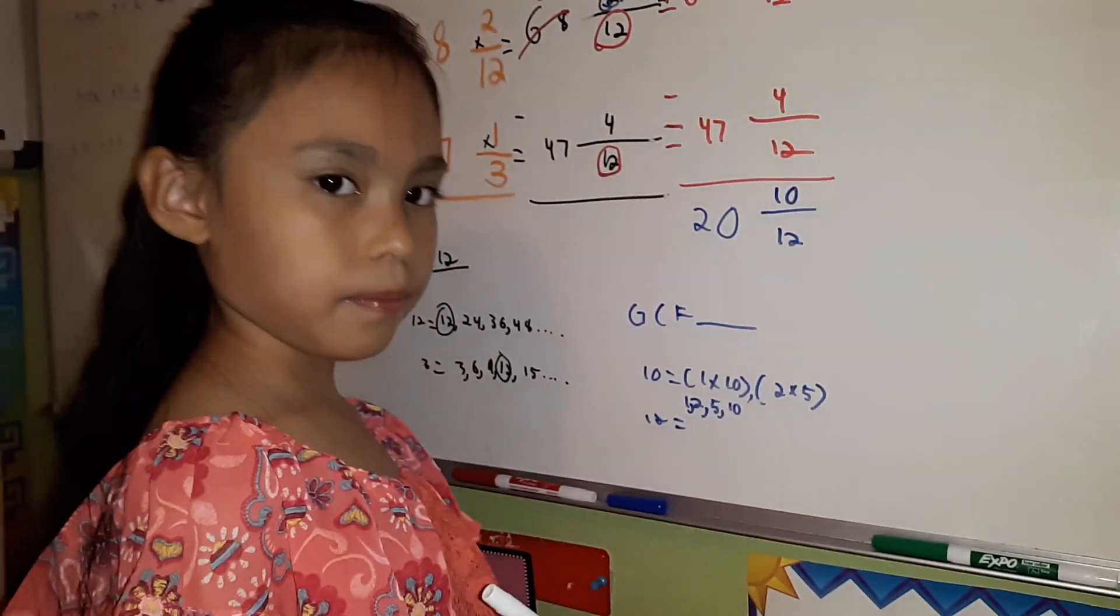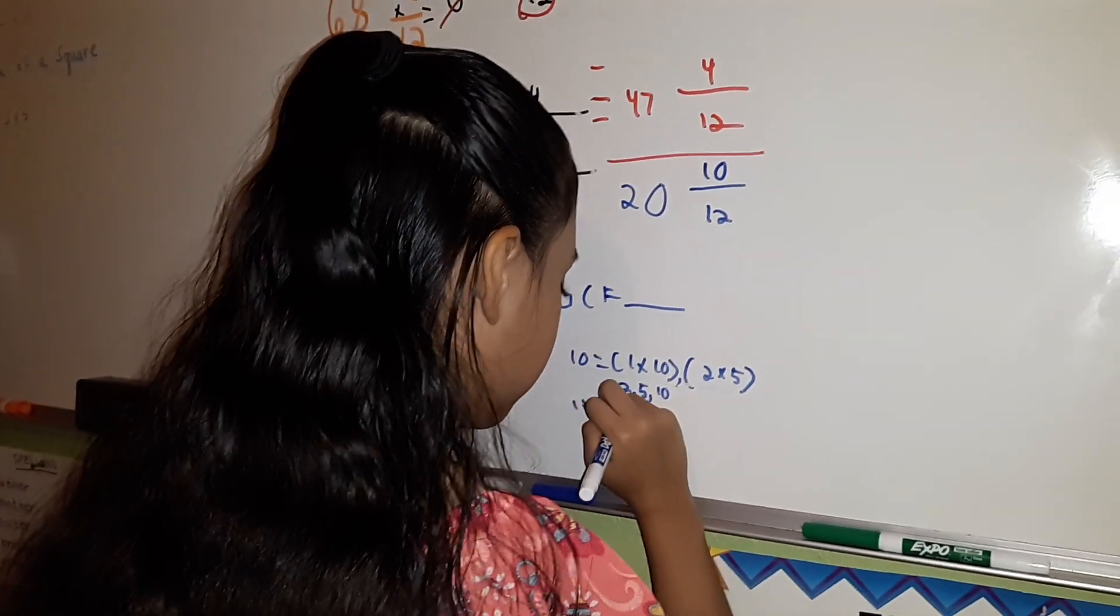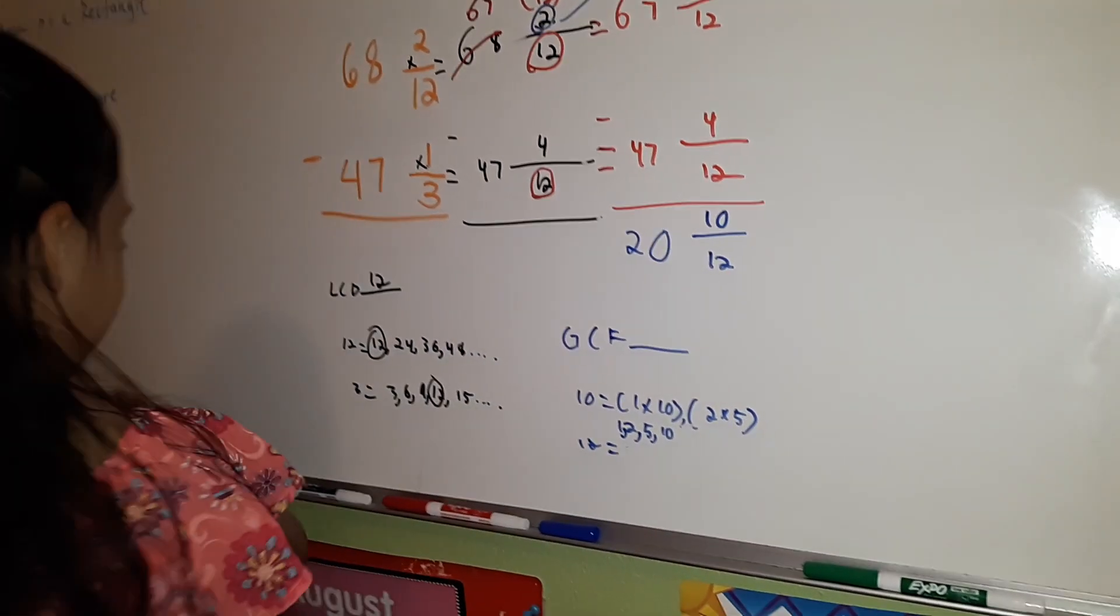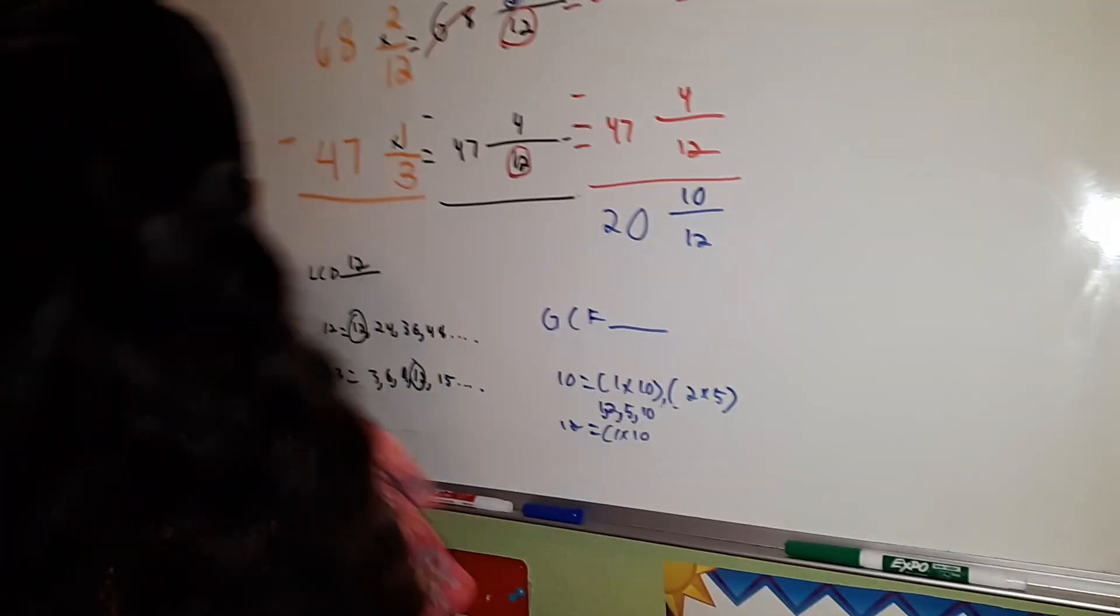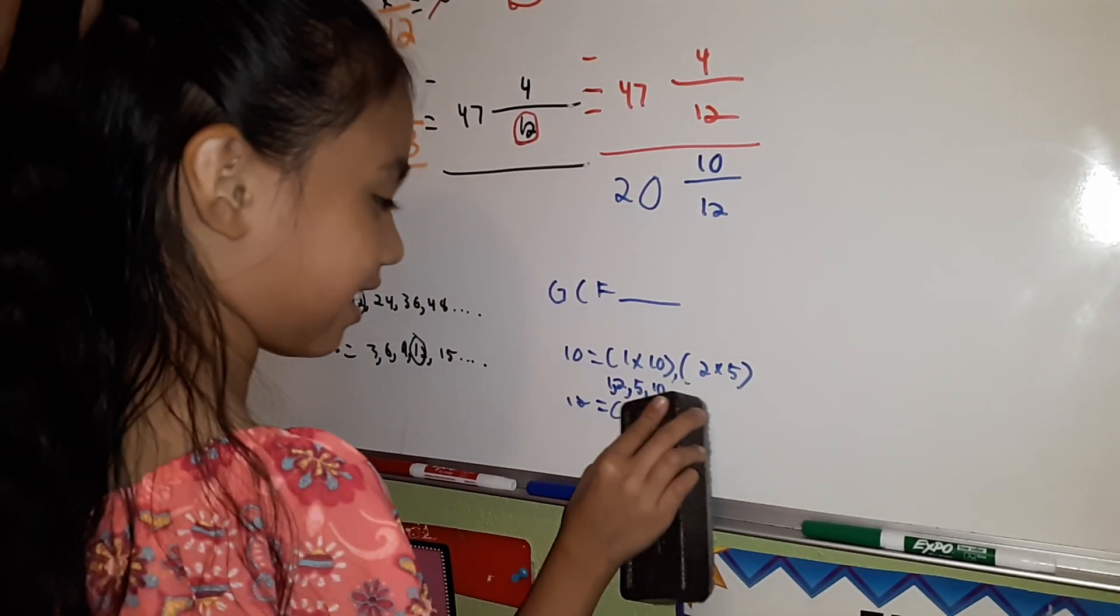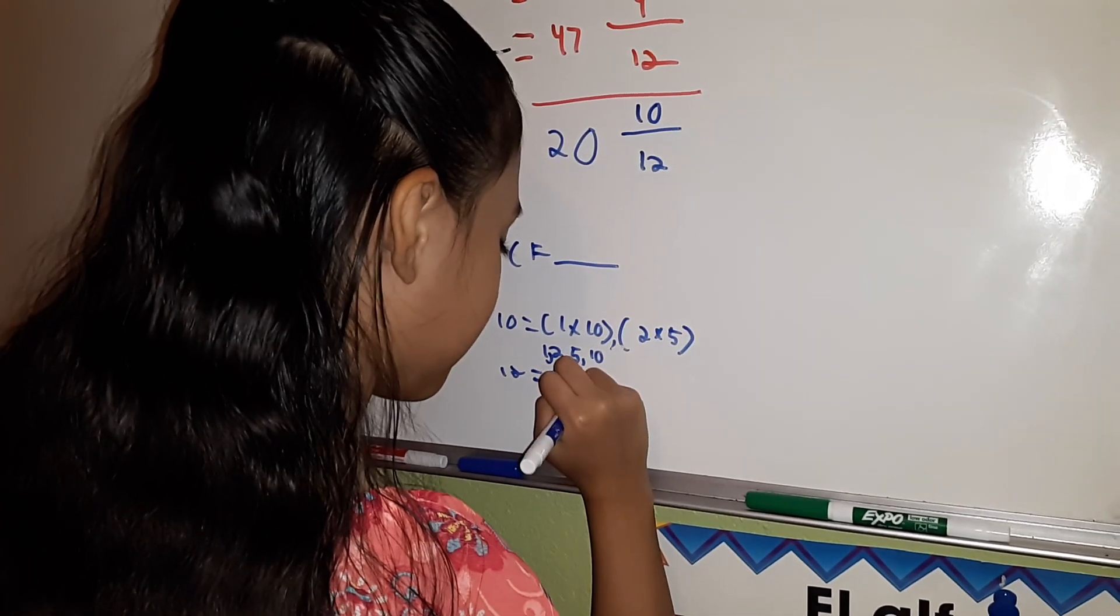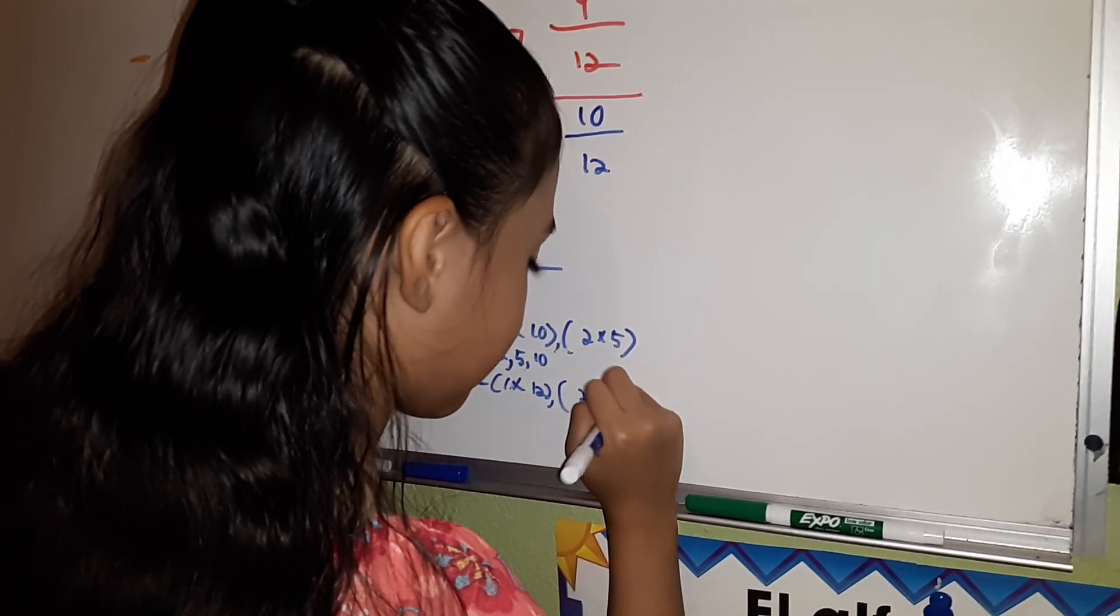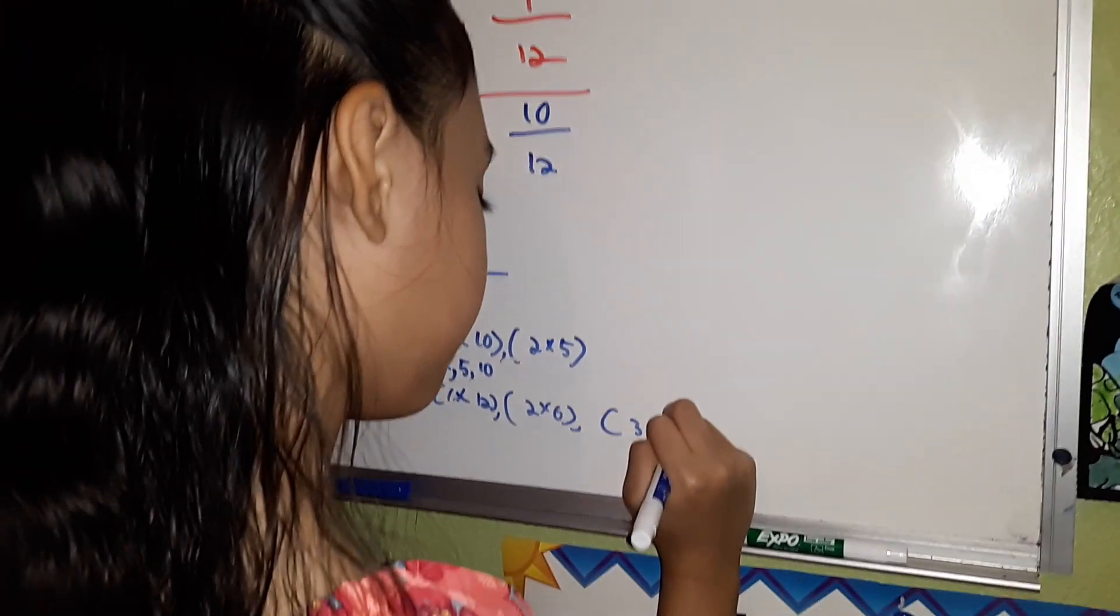The pair of factors of 12 are 1 times 12, 2 times 6, and 3 times 4.